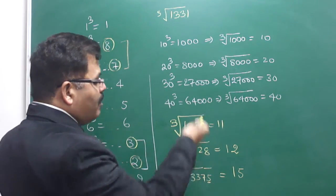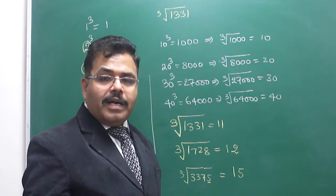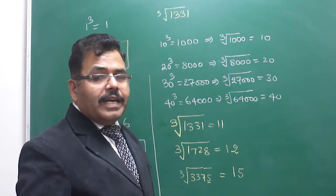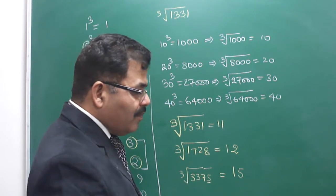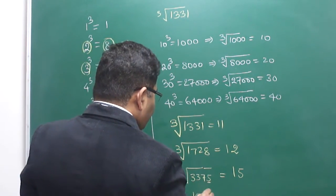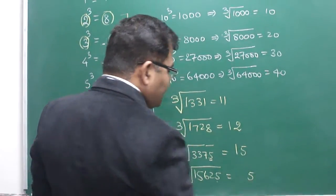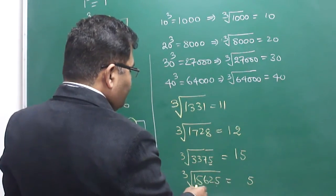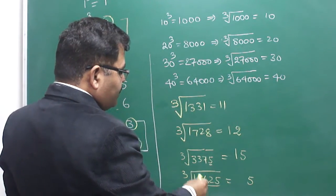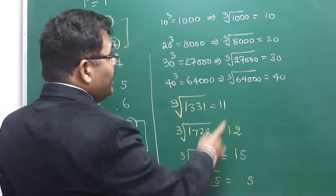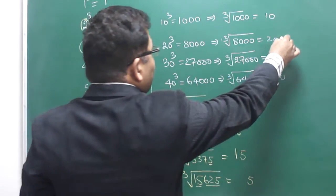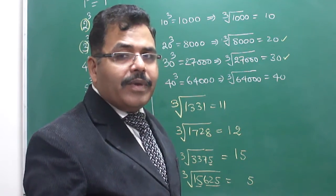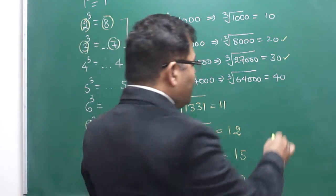Similarly, you can solve all cube root questions if the number is a perfect cube. If it is not a perfect cube, then you cannot do it like this — I will give you another alternate idea for that. But if it is a perfect cube, then the cube root can be calculated using this method. Suppose someone has to find the cube root of 15625. The 5 ensures that the unit place must be 5. This number lies between 8000 and 27000, so the answer must lie between 20 and 30. The number between 20 and 30 with unit place 5 is 25. So the answer is 25.